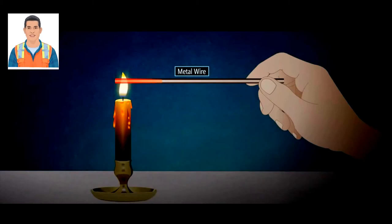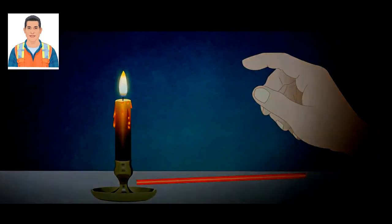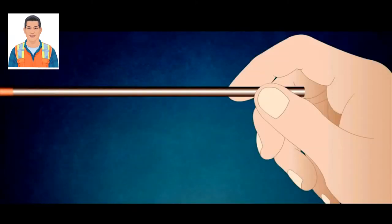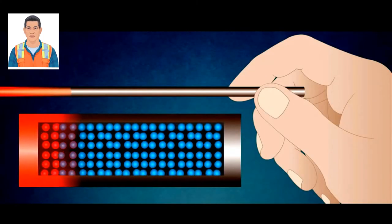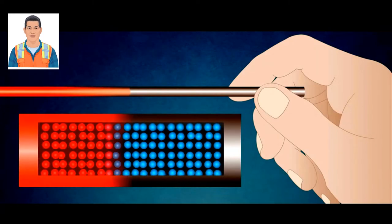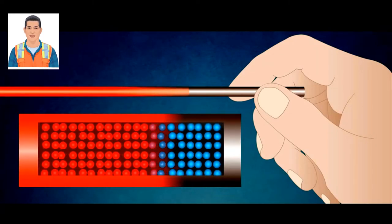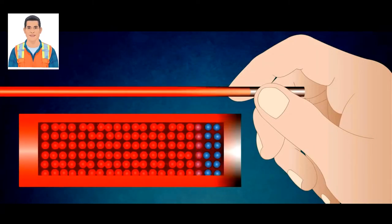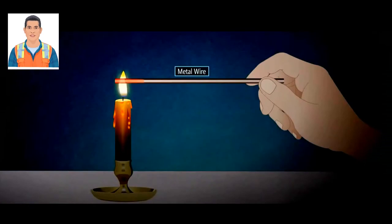Metals are good conductors of heat. The outer electrons of metal atoms are not attached to any particular atom. They are free to move between the atoms. When a metal is heated, the free electrons gain kinetic energy. This means that the free electrons move faster and transfer the energy through the metal. This makes heat transfer in metals very efficient.